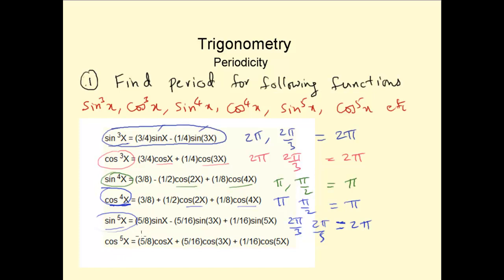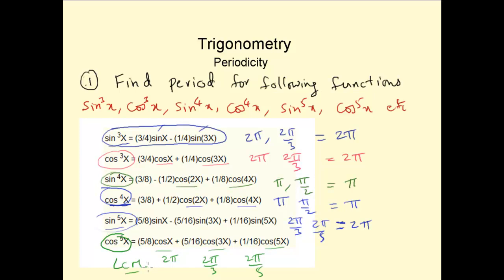And now cos to the power of 5. Cos⁵x can be written as (5/8)cosx plus (5/16)cos3x plus (1/16)cos5x. So the period of cos⁵x would be the LCM of the periods of cosx, cos3x, and cos5x. The period of cosx is 2π, the period of cos3x is 2π/3, and the period of cos5x is 2π/5. The LCM of 2π, 2π/3, and 2π/5 is again 2π.